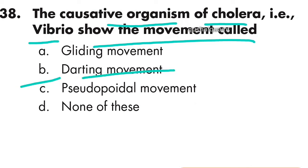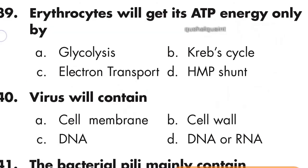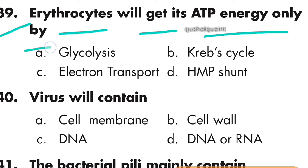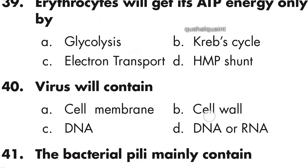Question 39: The erythrocyte will get its ATP energy only via glycolysis — option A is correct. Question 40: A virus will contain DNA or RNA — option D is correct.